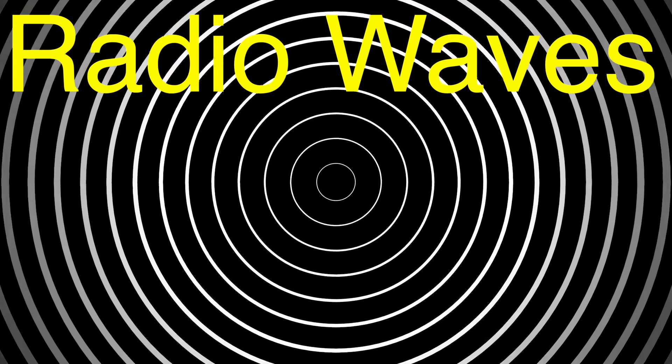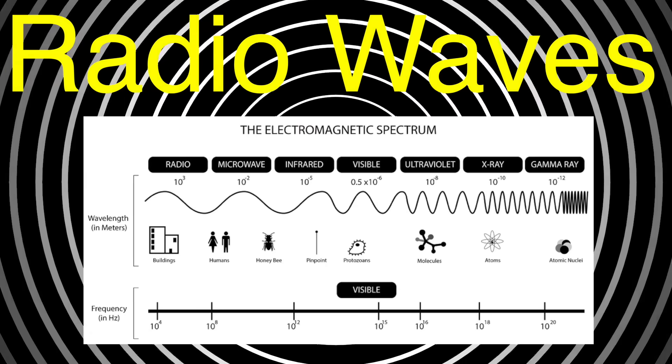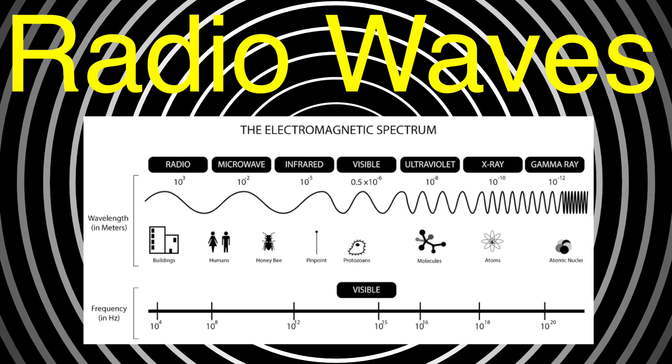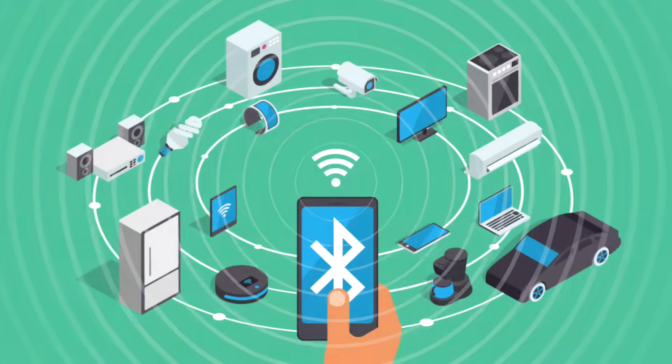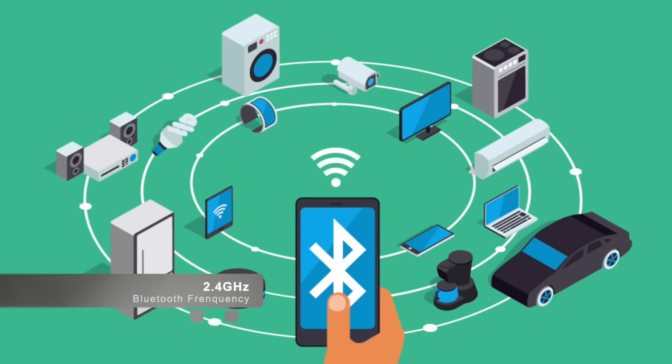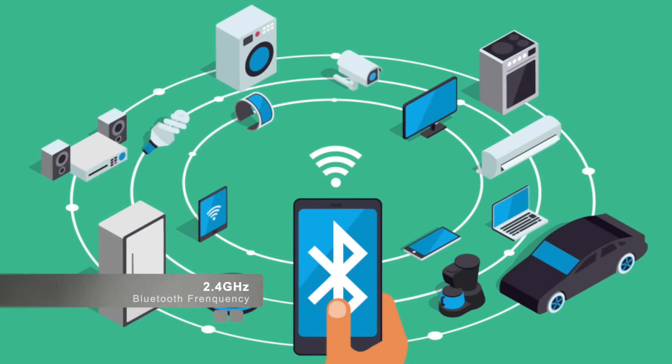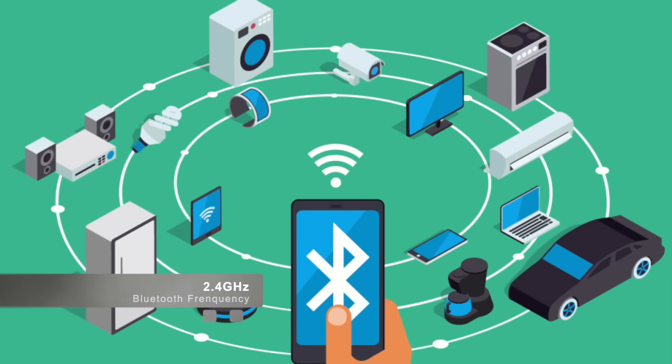At its core, Bluetooth operates using radio waves. These are part of the electromagnetic spectrum, like the waves used in Wi-Fi and FM radio. Specifically, Bluetooth transmits data within the 2.4 GHz frequency range, a universally accepted band for short-range communication.